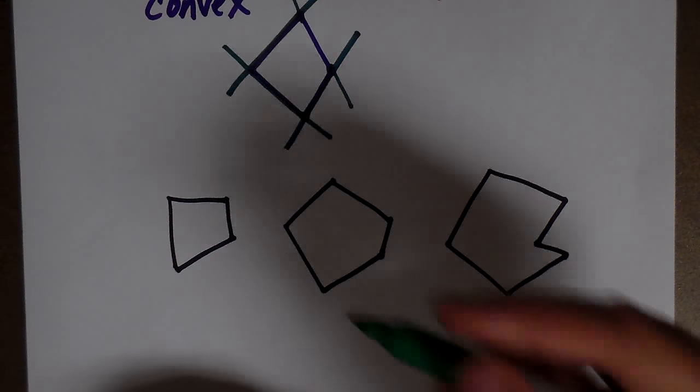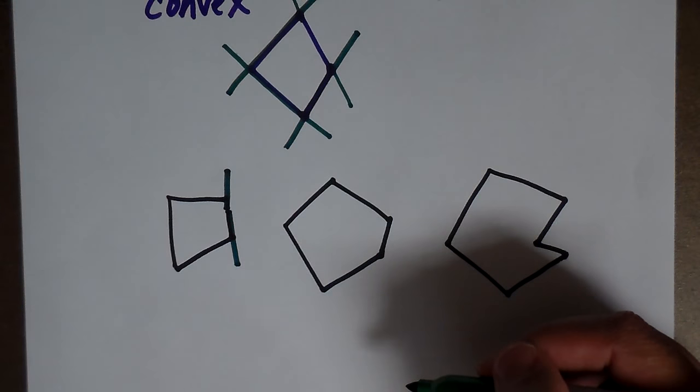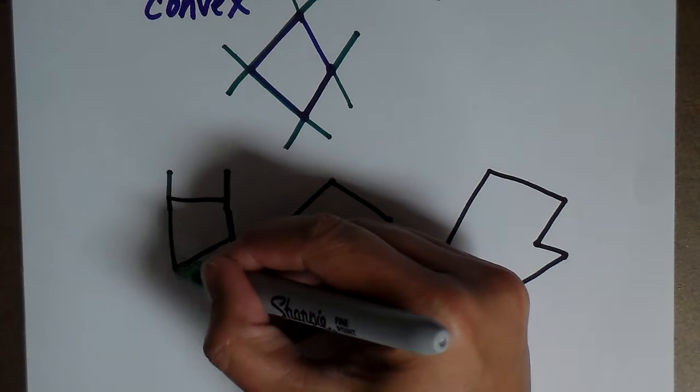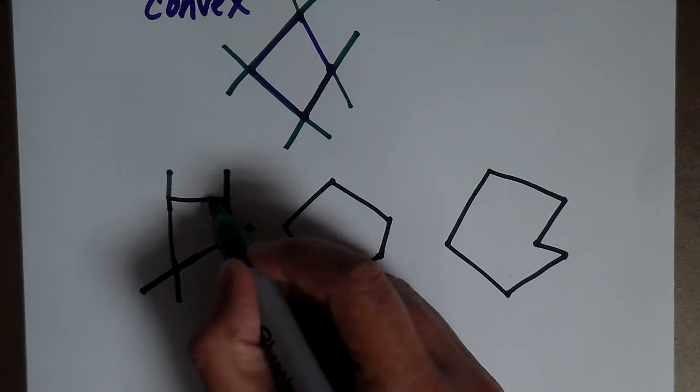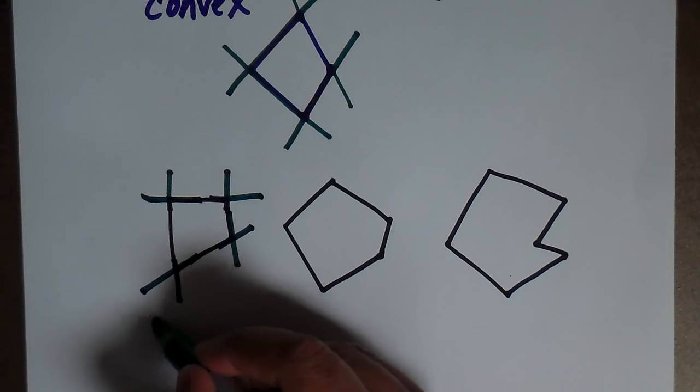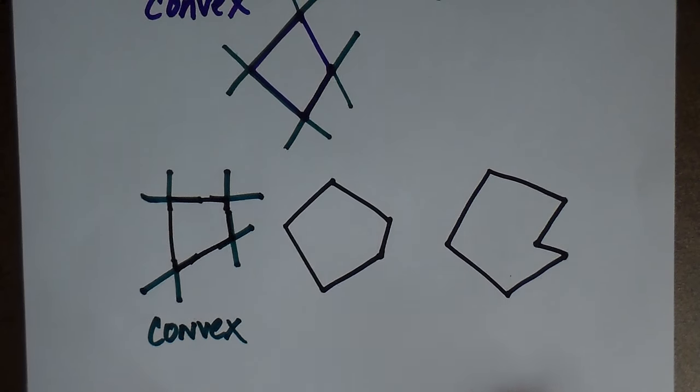Well, let's do the extension. I'm going to extend the side. If I extend this side out, does it go into the inside? No. That one? No. This one? No. This one? No. That is convex. None of the sides extend into the interior.